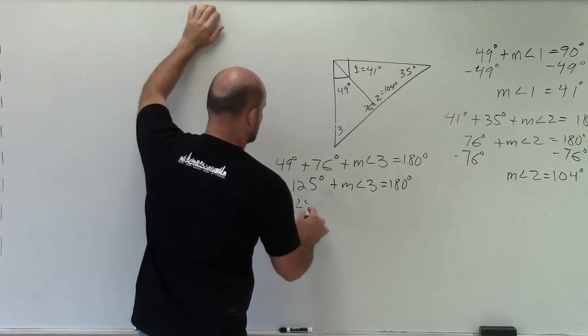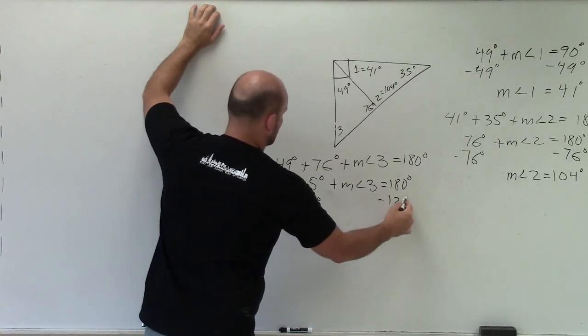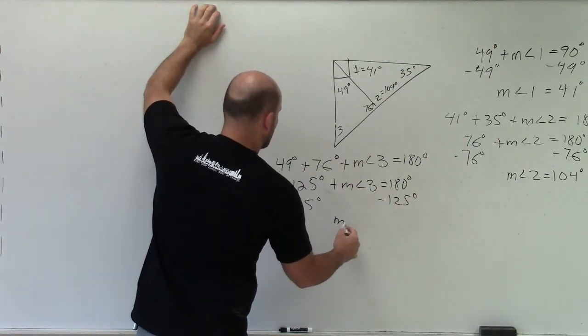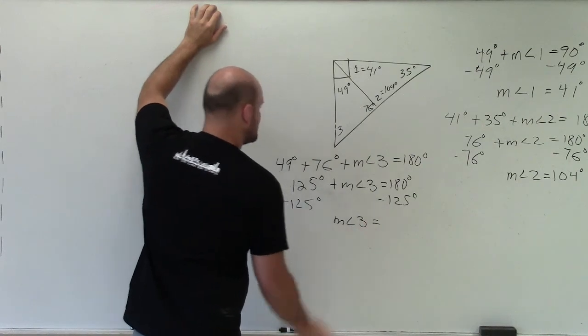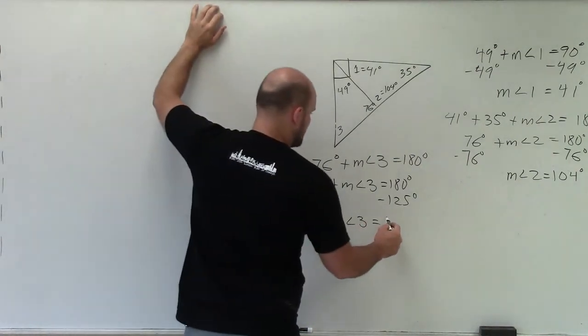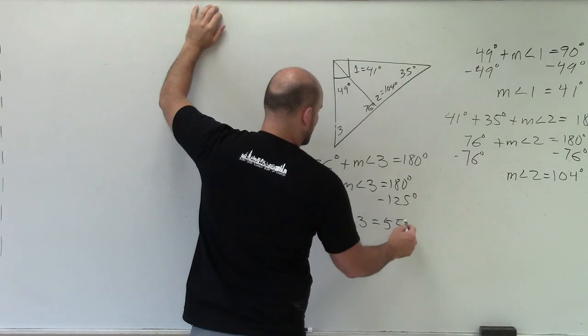Then I just subtract 125 degrees, and I have measure of angle 3 is going to be equal to 55 degrees.